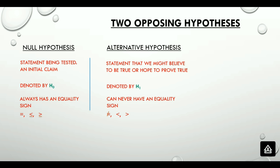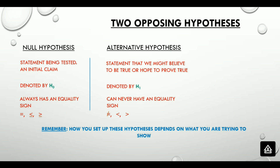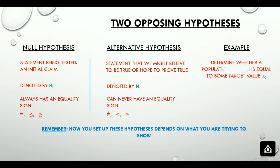An important point to remember is that how we set up these hypotheses depends on what we are trying to show. For example, if we need to determine if a population mean mu is equal to some target value mu 0, then the null hypothesis H sub 0 is mu equals mu 0, and the alternative hypothesis H sub 1 could be mu less than mu 0, mu greater than mu 0, or mu not equal to mu 0.